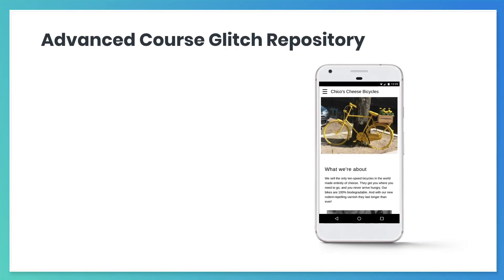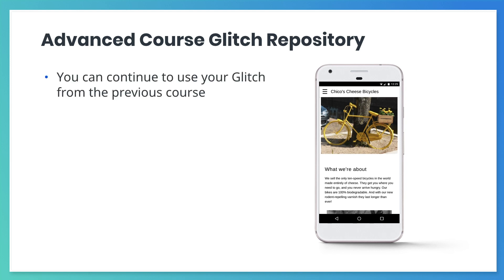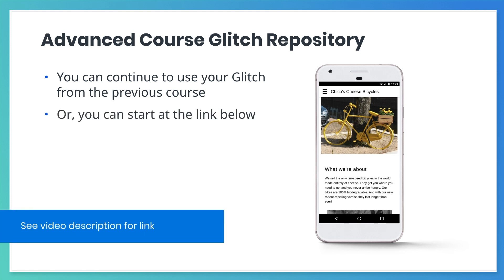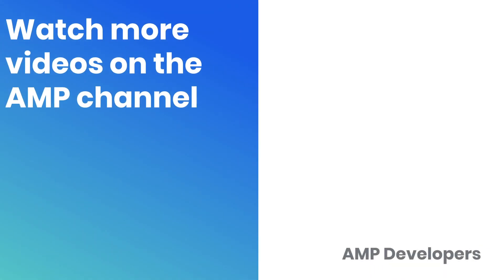If you have been following along with the previous exercises, you can continue using the same Glitch repository to complete this course. If necessary, you can also start with a new Glitch repository at the link in your video description. This Glitch repository includes all of the code from the previous courses. No matter which Glitch repository you use, it already contains the styles, image assets, and server endpoints that you will need to complete these exercises. At the end of this course, we'll provide a final Glitch repository that contains code from all of the course exercises.